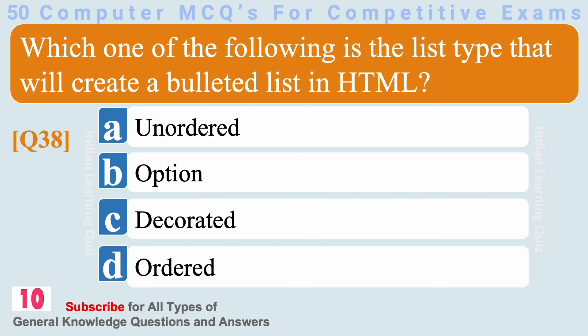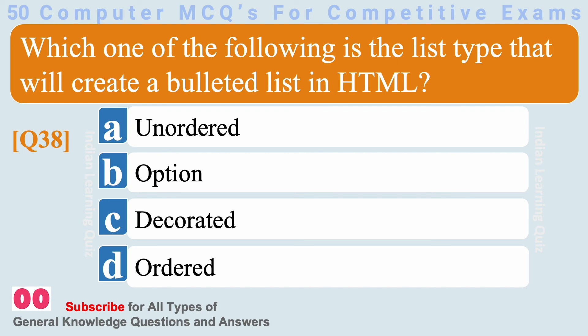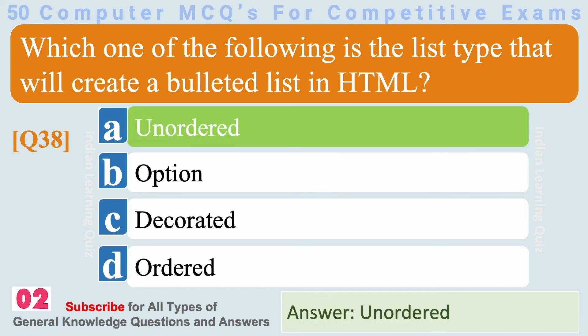Which one of the following is the list type that will create a bulleted list in HTML? Answer: Unordered.